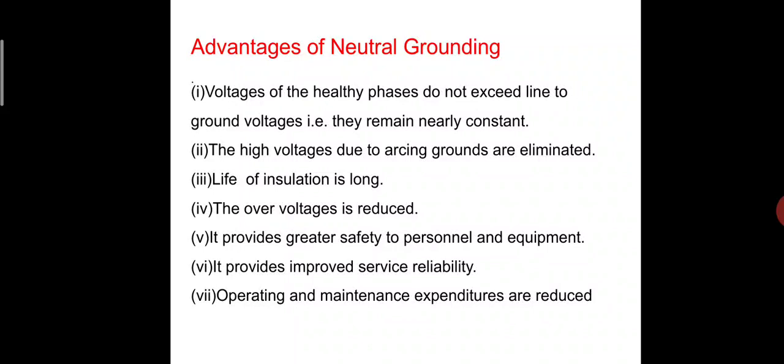Disadvantages of ungrounded neutral system: Under a single line-to-ground fault, the voltage to earth of healthy phases becomes full line value. This may result in insulation breakdown and may even lead to heavy phase-to-phase fault condition. Voltages due to lightning charges do not find a path to earth. Due to these disadvantages, ungrounded systems are not commonly used.